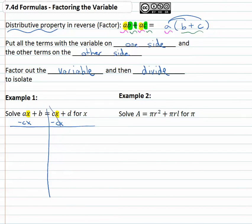However, we've got this b term that does not have a variable on it. We need to get rid of the b also, so we'll subtract b from both sides as well. That way everything on the left has an x, ax minus cx. Nothing on the right has an x, we've got d and a minus b.